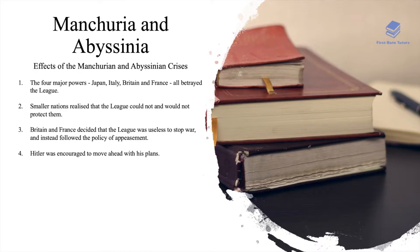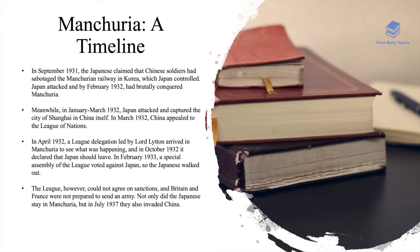The four major powers — Japan, Italy, Britain and France — all betrayed the League, and smaller nations realised that the League could not and would not protect them. Moreover, Britain and France decided that the League was essentially useless to stop war and instead followed a policy of appeasement, and Hitler was encouraged to move ahead with his plans, which ultimately led to the Second World War.